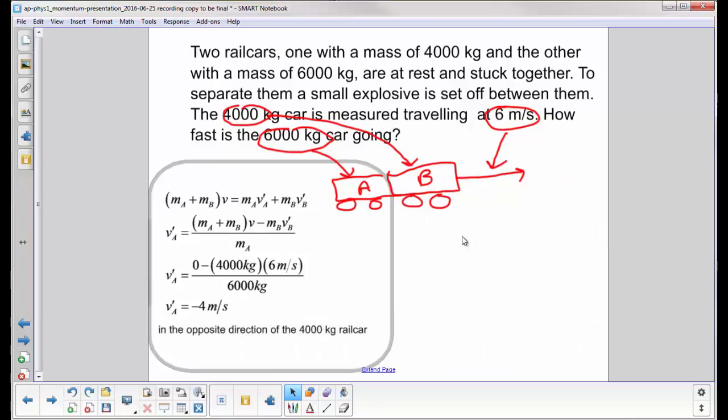So this is an explosion, which is the direct reverse equation from a perfectly inelastic collision, where I have the two cars coupled in the beginning and then they separate. I want to solve for the velocity of A, the final velocity of A.